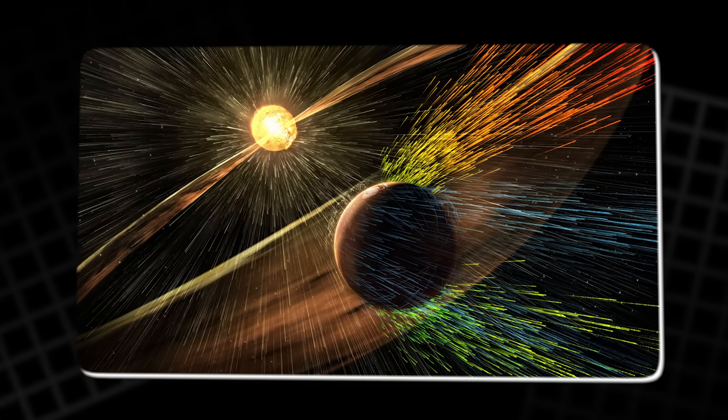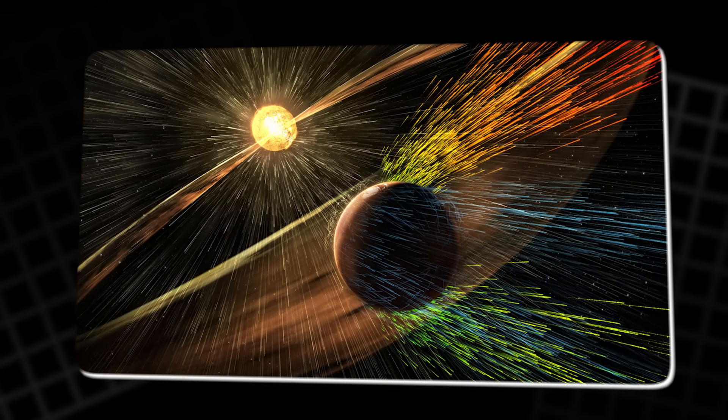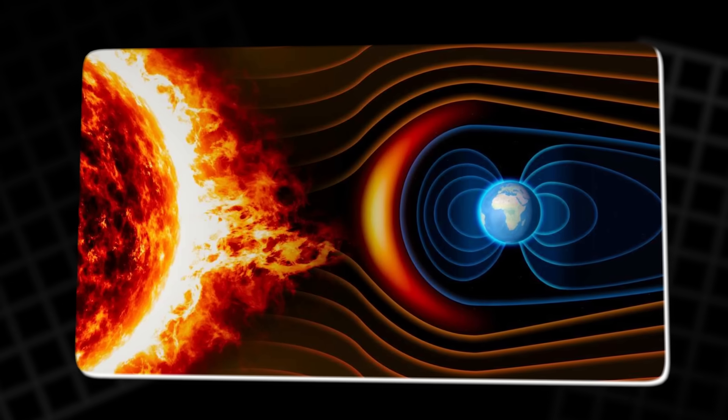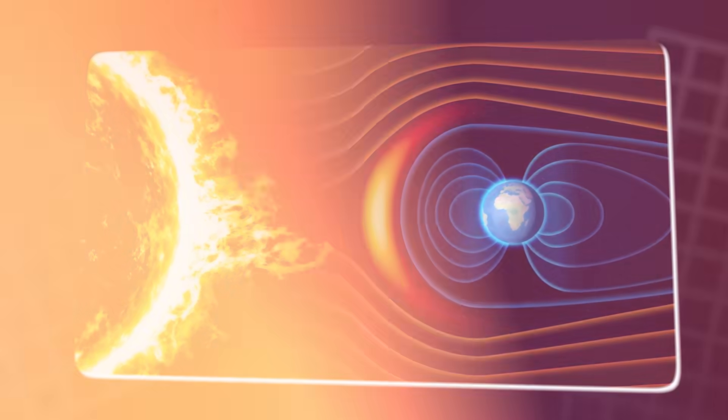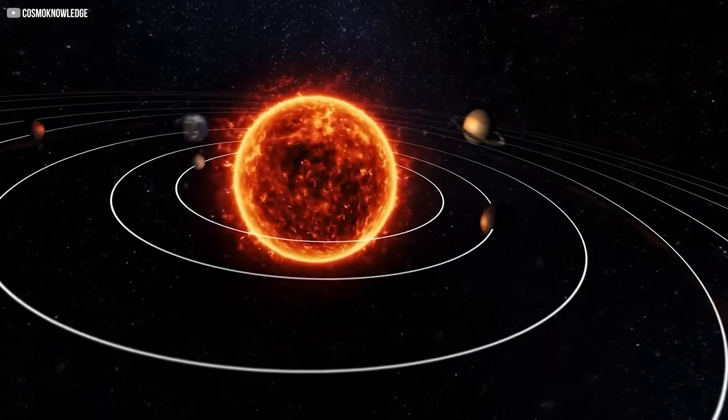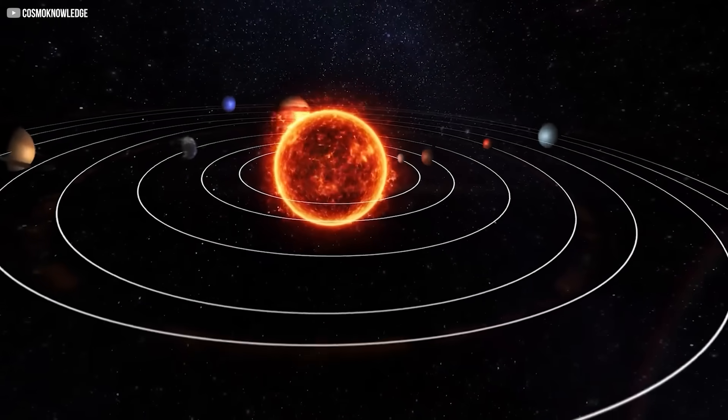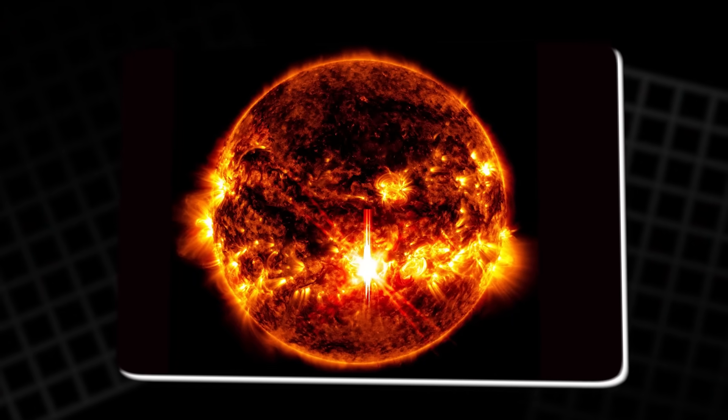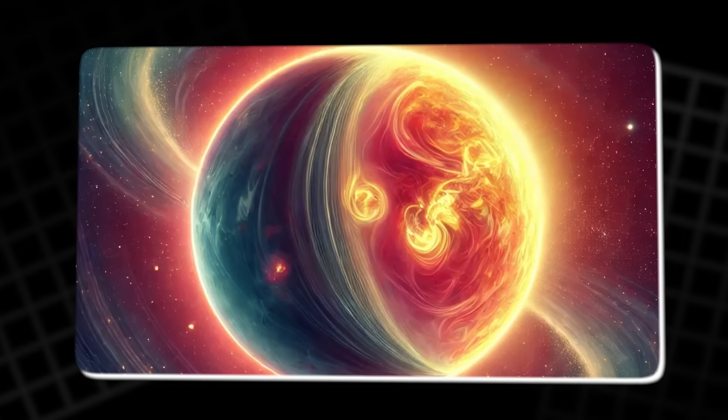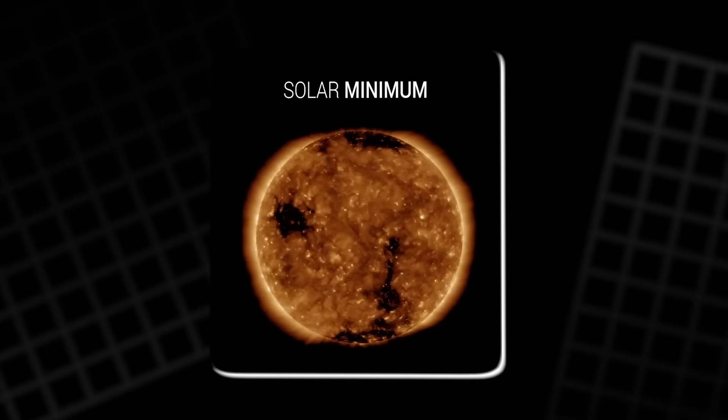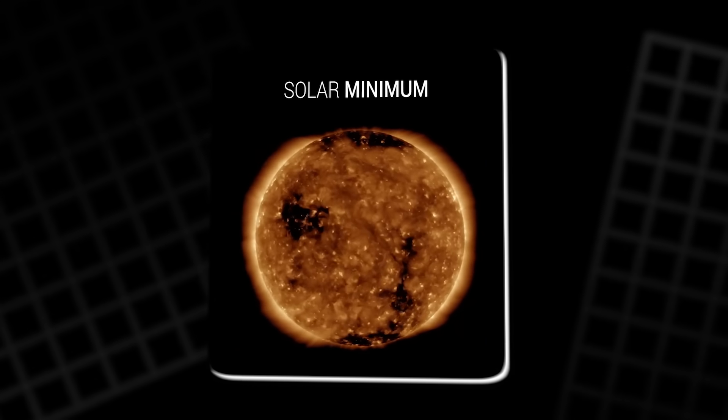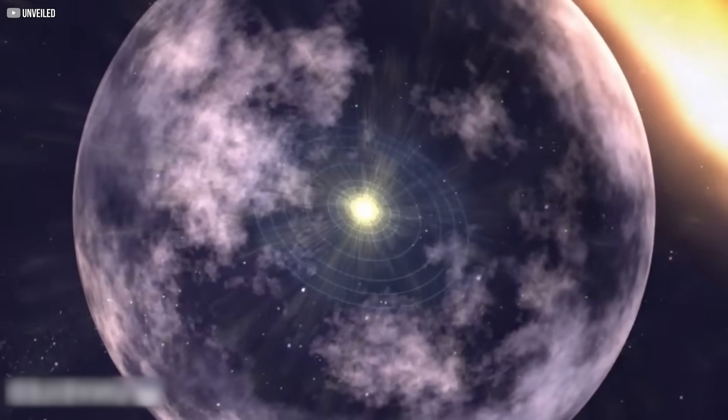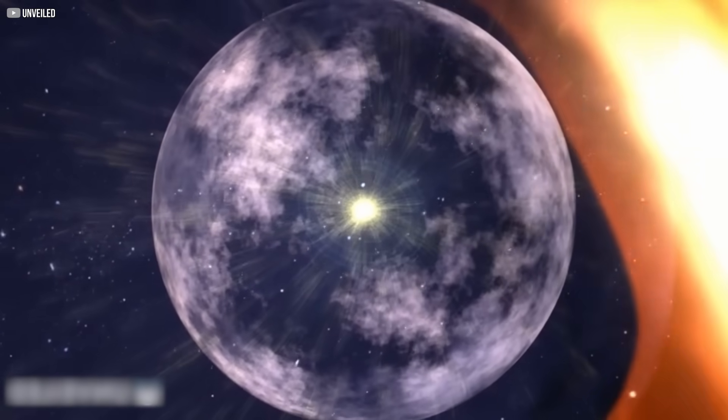The sun's particles slow down as they encounter the cooler material from space, creating a dramatic shift in the properties of the surrounding environment. The boundary itself is not fixed. It fluctuates, depending on the sun's activity. During solar maximum, the sun pushes outward, expanding the heliosphere. In contrast, during solar minimum, it contracts inward, making the heliopause a dynamic and ever-changing feature of our solar system's edge.